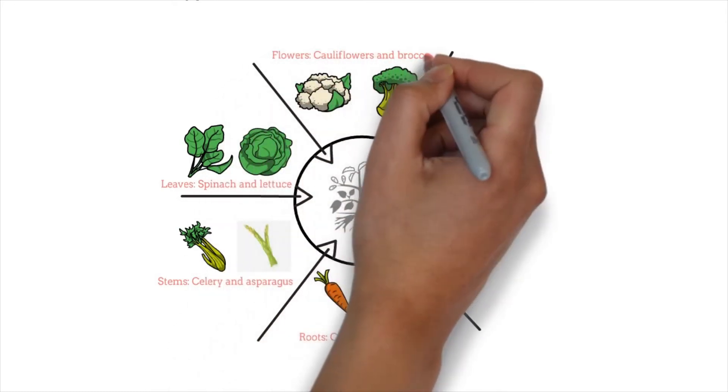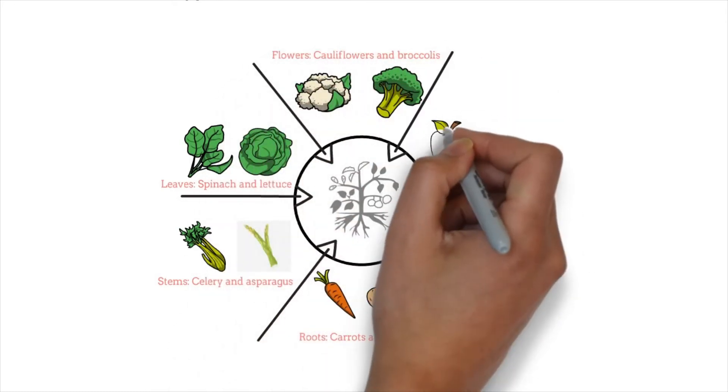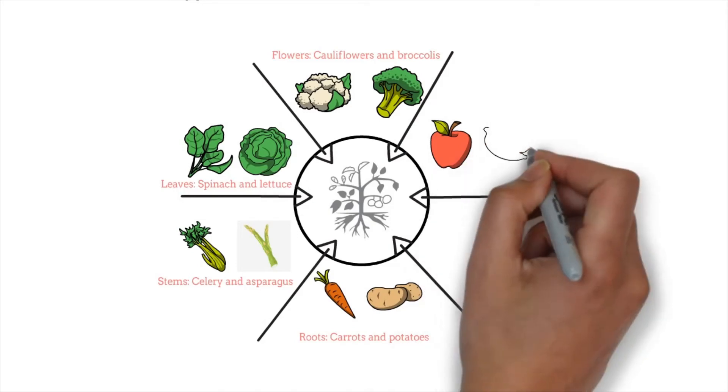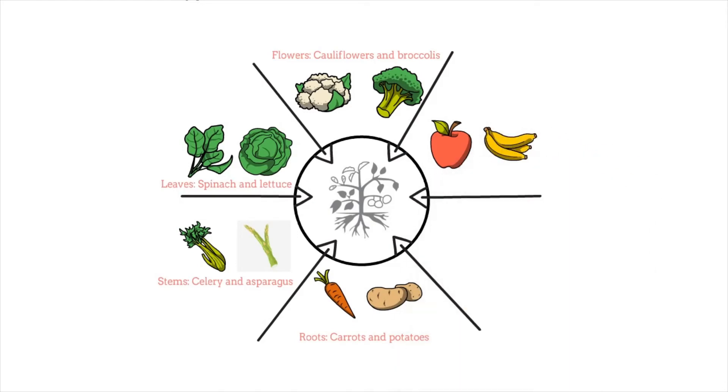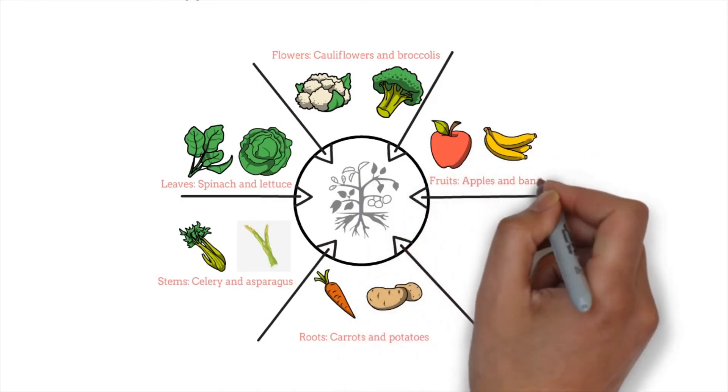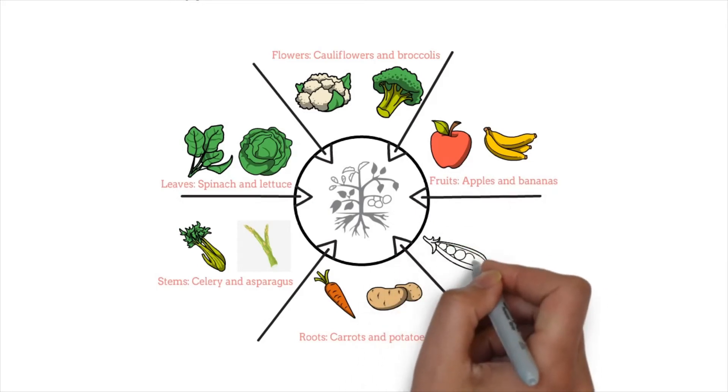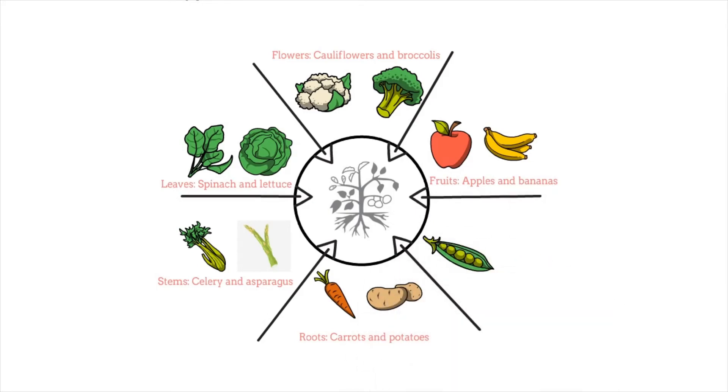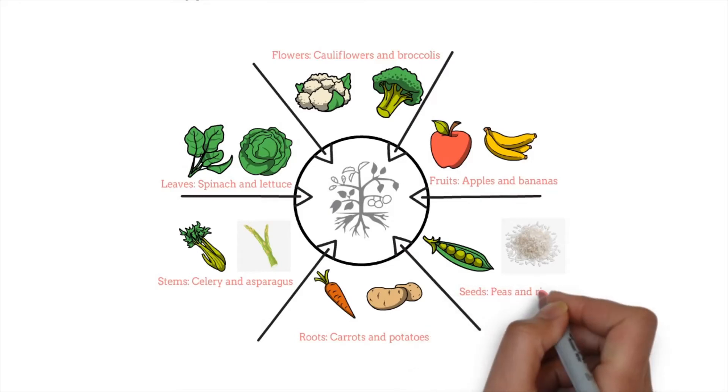Flowers: cauliflower and broccoli. Fruits: apples and bananas. Seeds: peas and rice.